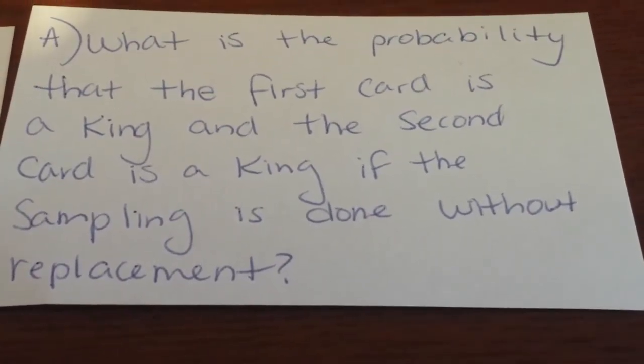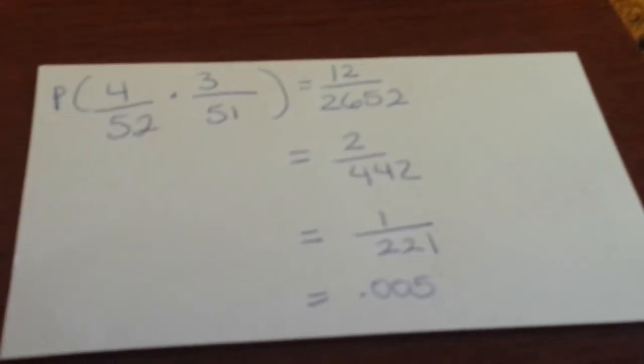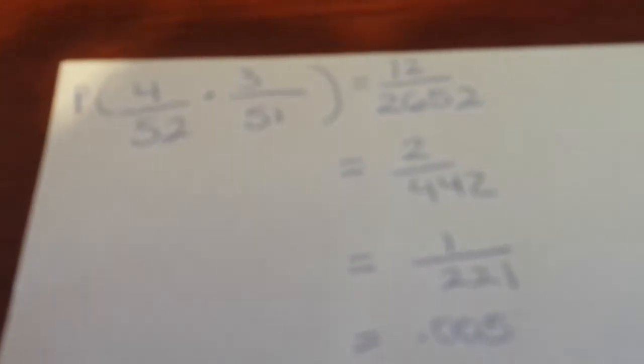the sampling is done without replacement? So first we take our information. We have 4 over 52 times 3 over 51 which will equal 12 over 2652.